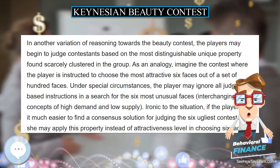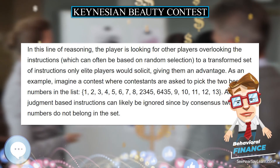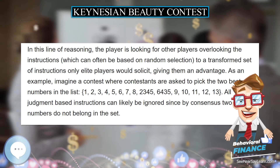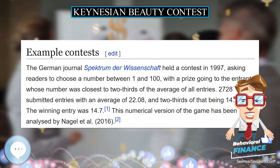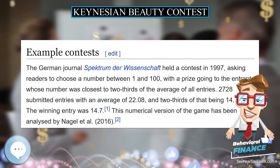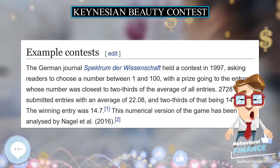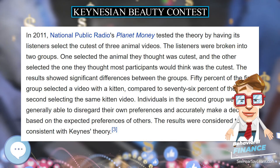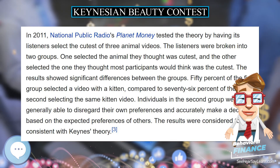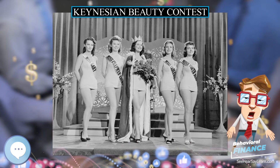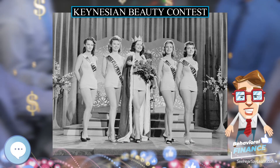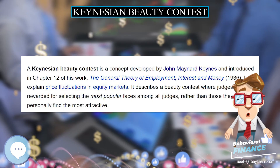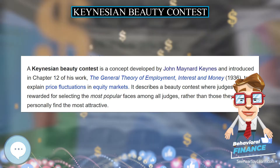As an example, imagine a contest where contestants are asked to pick the 2 best numbers in the list: 1, 2, 3, 4, 5, 6, 7, 8, 2345, 6435, 9, 10, 11, 12, 13. All judgement-based instructions can likely be ignored since by consensus 2 of the numbers do not belong in the set.